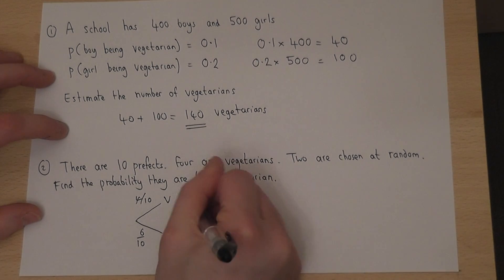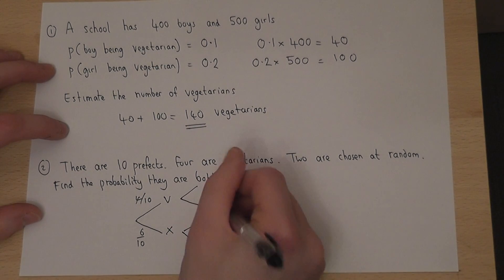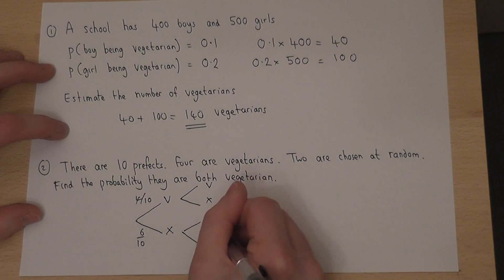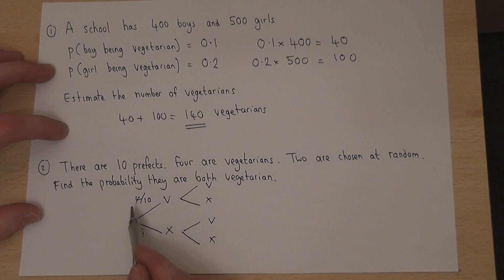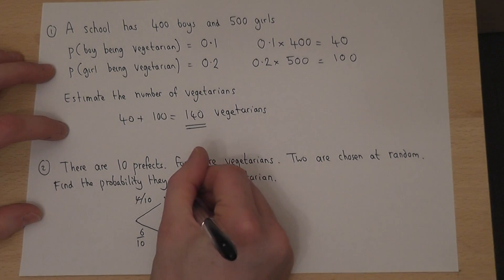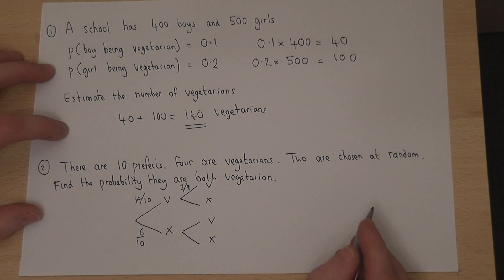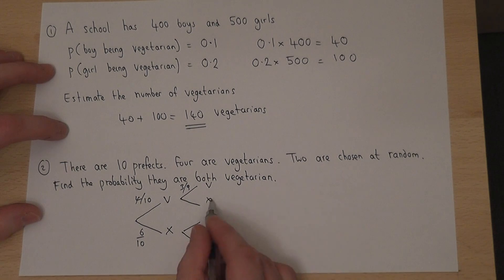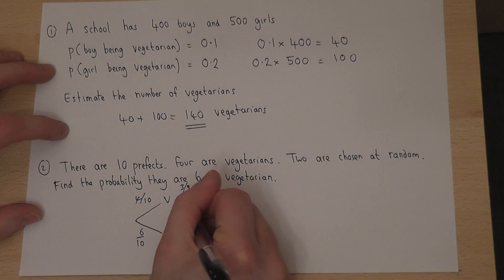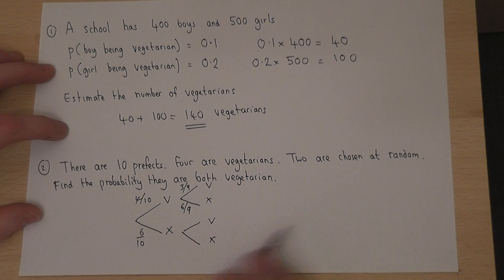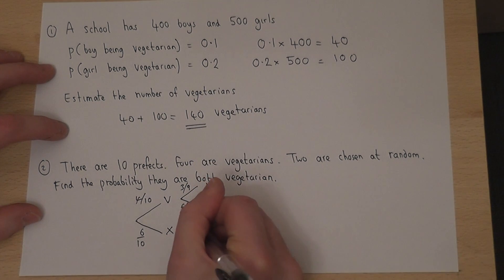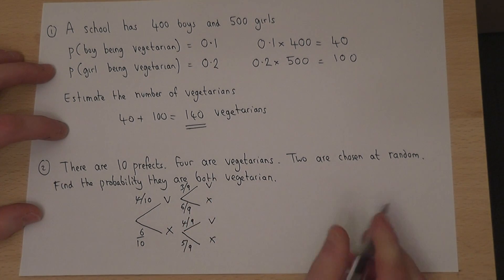When you pick your second prefect out, the numbers change slightly. If you pick vegetarian, there are only 3 left. So that will be 3 out of 9 for vegetarian. But there are still 6 left who are not. So that's 6 out of 9. If the first person was not vegetarian, there are still 4 vegetarians left out of 9. But only 5 left who are not vegetarian.